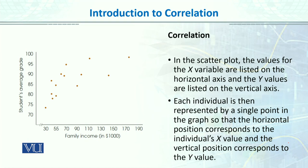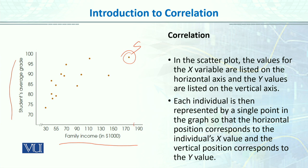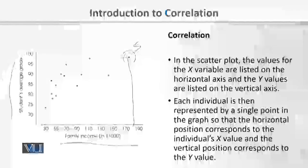This is basically a graphical representation of the correlation. We need to know the two variables — one is X and one is Y. Here on the screen, you can see family income in US dollars and the student's average grade on their test. A scatter plot is a double-entry chart where one single point represents the score of one individual on both variables. Each dot represents each individual and their score on the two variables. This is called a scatter diagram or scatter plot.